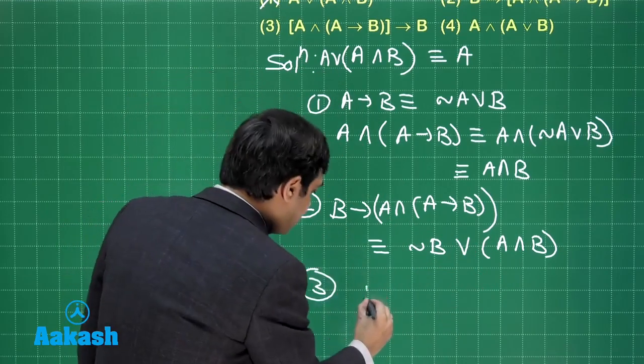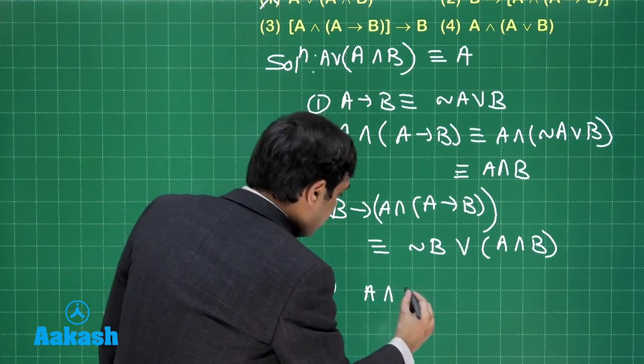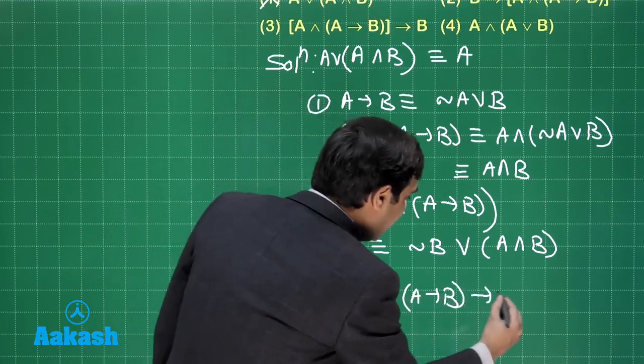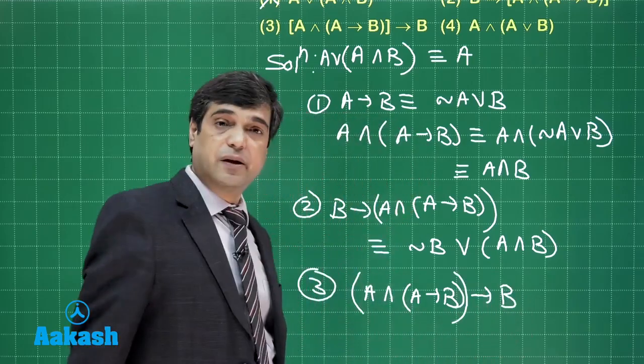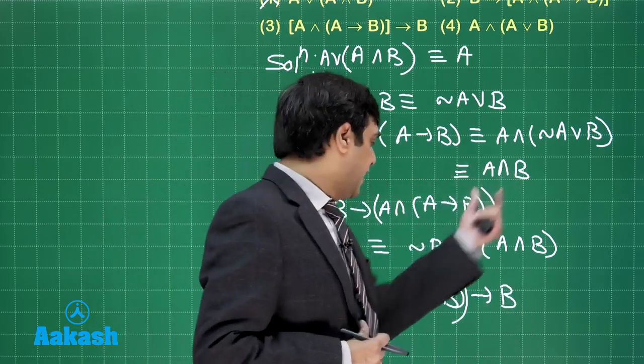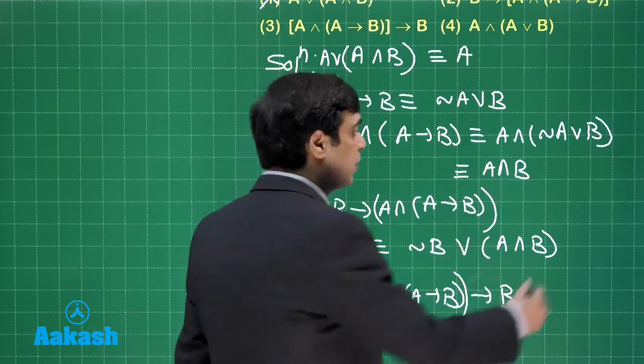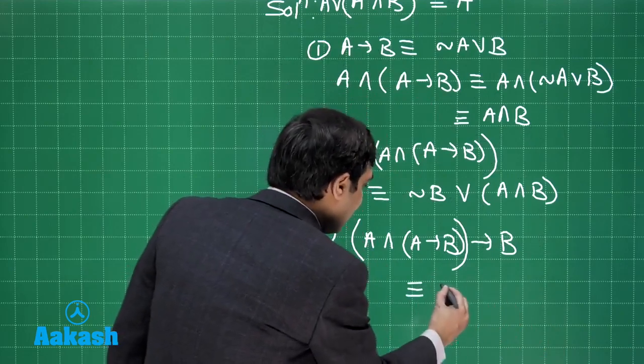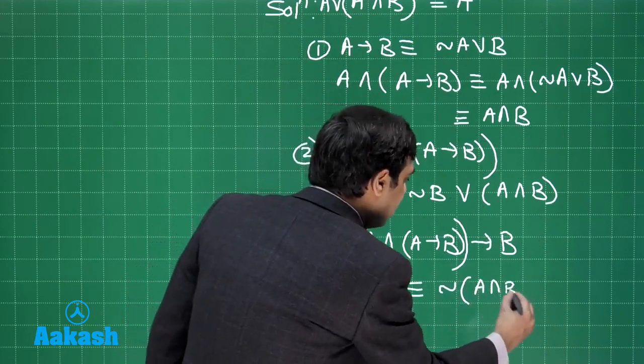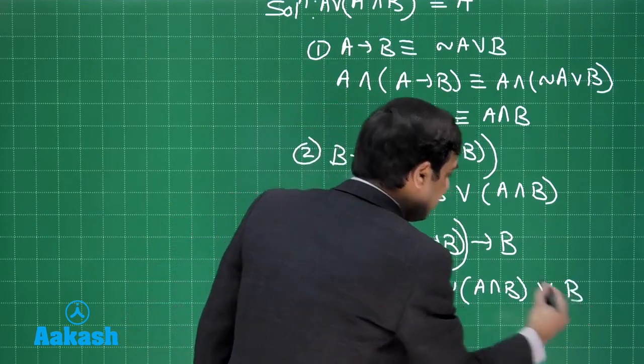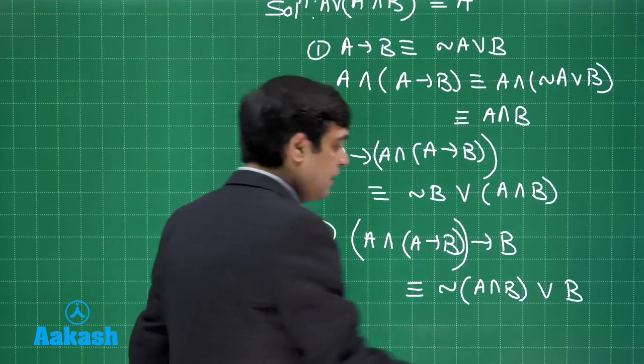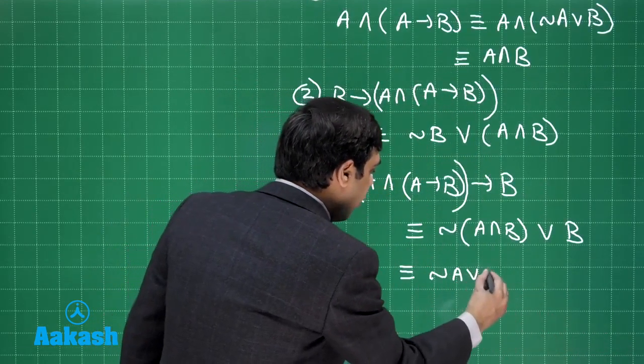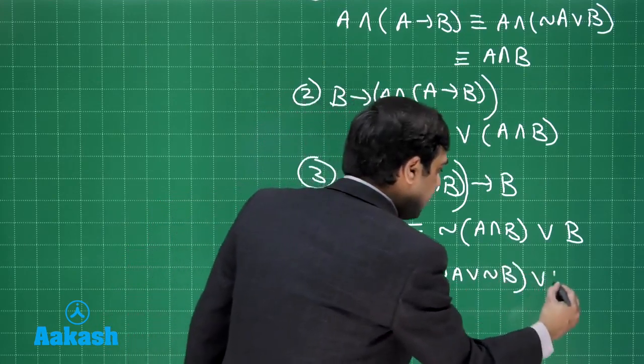When you talk about three it is A and B. We simply have if A then B and again if this term then B. Meaning A and B if A and B then B. This is what we are looking for. Now here this is equivalent to negation A or negation B or B. Now when negation is distributed it becomes negation A or negation B or B.